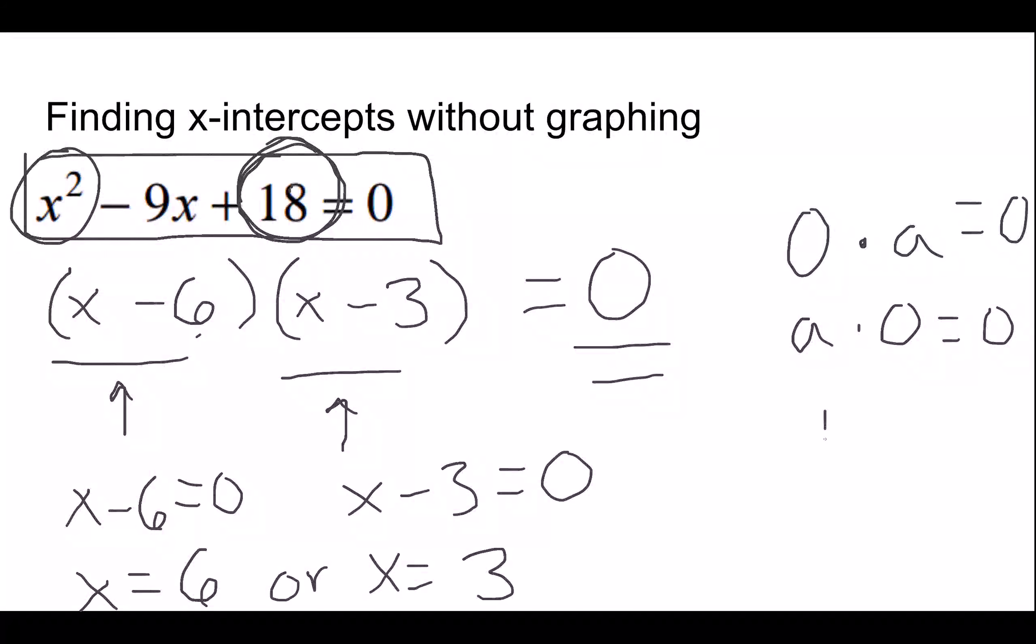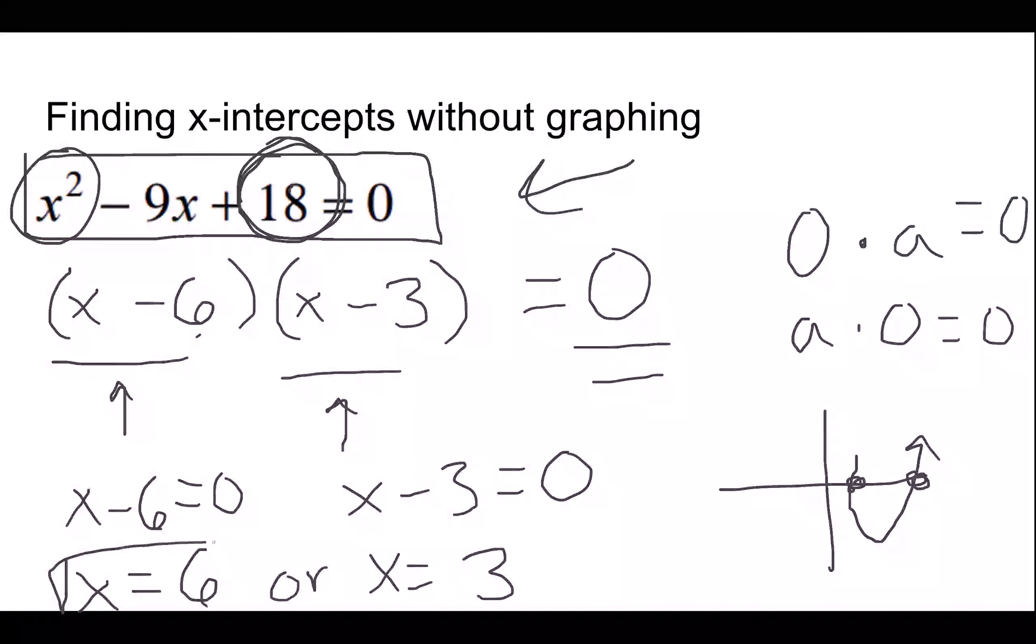And if you went through and you actually graphed this thing, you would find that that is really what the parabola does. It's going to be over on this side and it's going to go right underneath it and it's going to cross at 3 and it's going to cross at 6. So these are my x-intercepts.